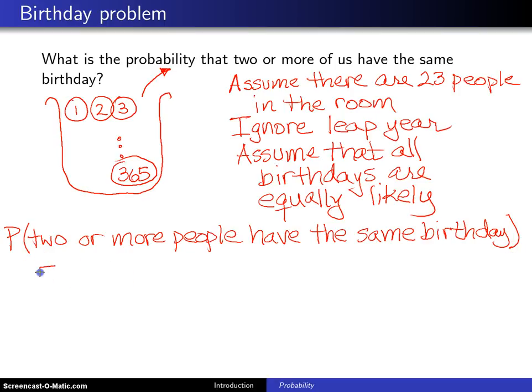And one trick that you're going to find very early in probability is you're going to see that this is the same as 1 minus the probability that all of the people in the room have different birthdays, much easier problem to solve.